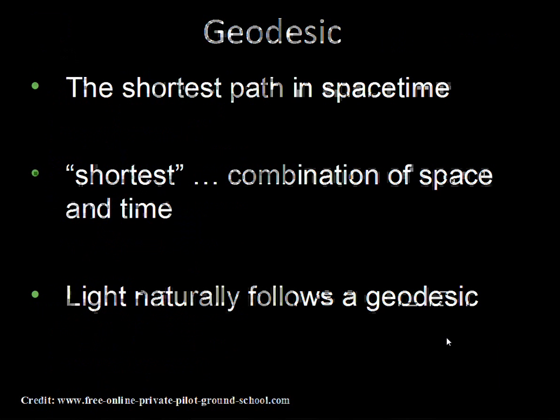To understand gravity in general relativity, we need to understand the curvature of space-time. Space-time is three spatial dimensions — X, Y, and Z — plus the dimension of time. A geodesic is the shortest path in space-time, where shortest means this combination of not only space but time. General relativity deals with changes in time differently than special relativity, and there are situations where clocks will run at a different rate due to the ideas of general relativity.